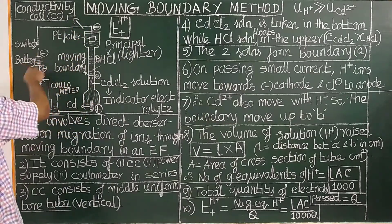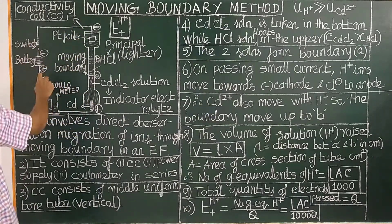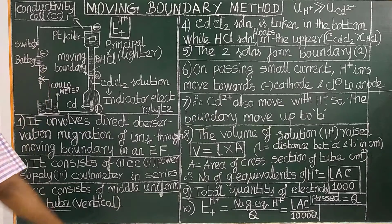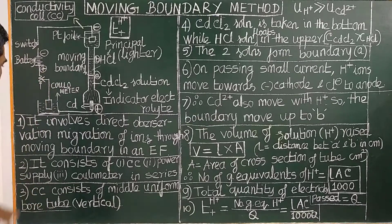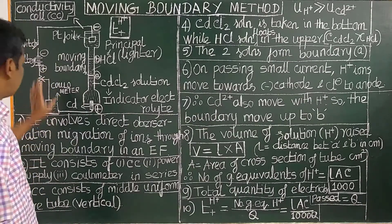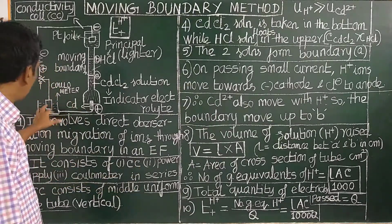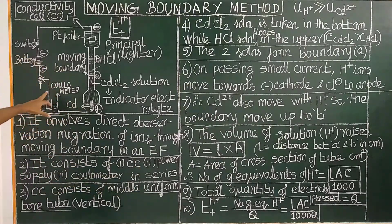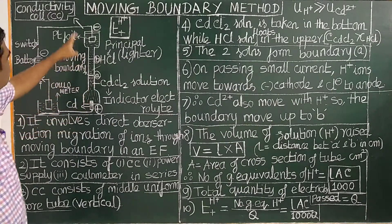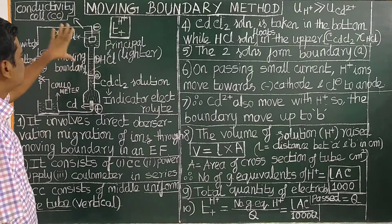It consists of a conductivity cell or electrolysis cell, a coulometer, a battery, a switch, and a variable resistance. The coulometer is connected in series with the conductivity cell.